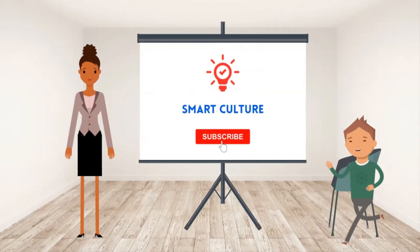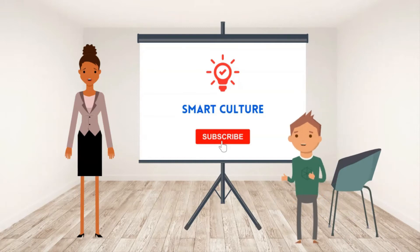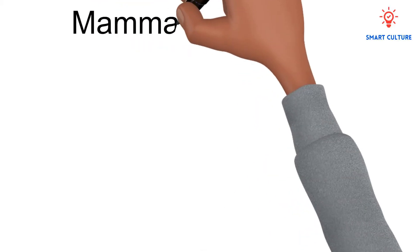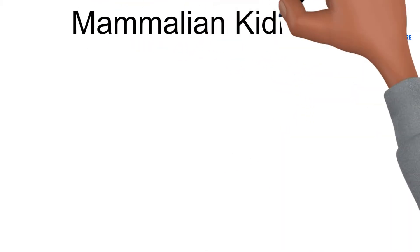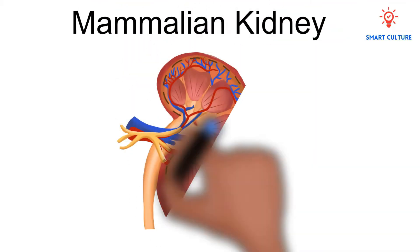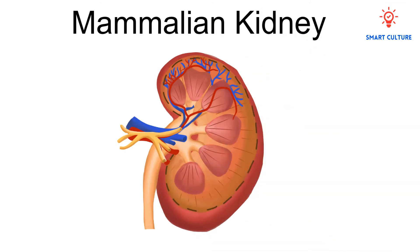Welcome to Smart Culture. In this video, we'll look at the mammalian kidney. First, we'll look at this diagram and then we'll move on to the dissection of the mammalian kidney. Let's start.